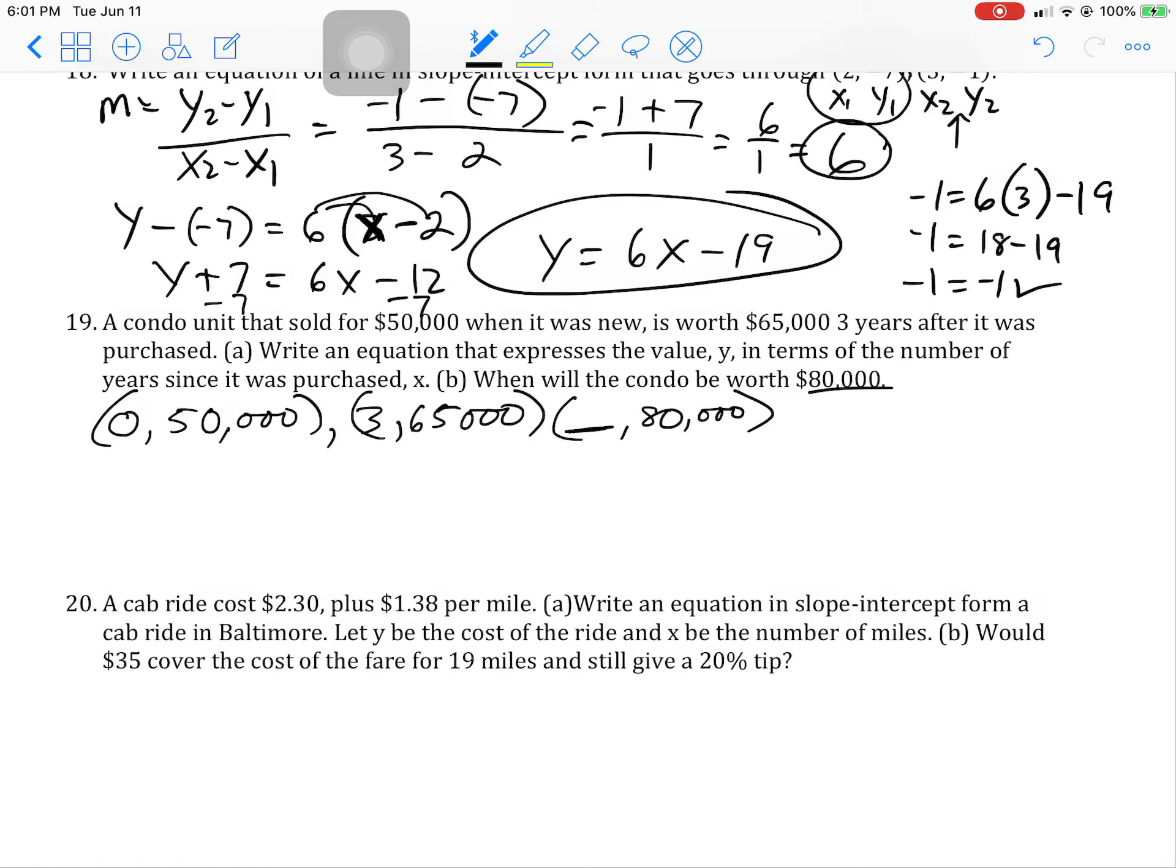So we can count this as the two points. That's point one and this is point two. We're going to go $65,000 minus $50,000, three minus zero. That's going to be $15,000 over three, which is $5,000. That is our slope. That is our rate of increase that this condo unit appreciates.